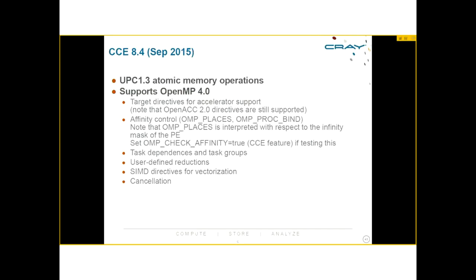The GNU-compatible inline assembler support — which applications like MILC use — is now supported by the Cray compiler. There are also improvements to the UPC implementation. The big addition in CCE 8.4 is support for OpenMP 4, including accelerator directives, affinity control with OMP_PLACES (interpreted in the context of the affinity masks that ALPS gives your application), user-defined reductions, the 'is' directive, cancellation, and tasking improvements.